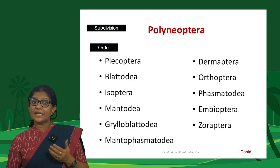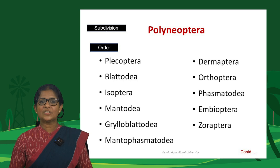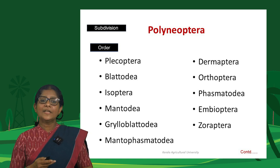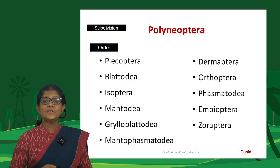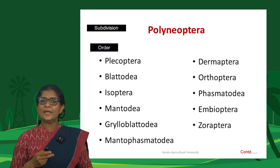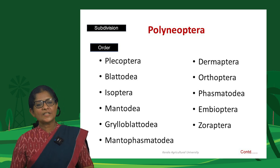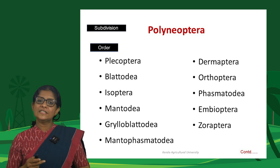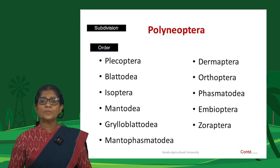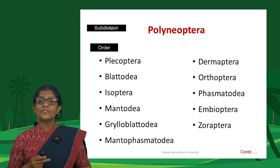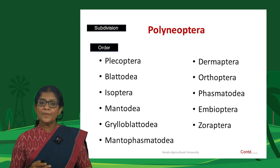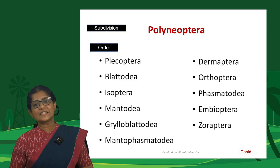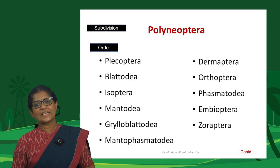The 11 insect orders under Polyneoptera are: Plecoptera, Blattodea, Isoptera, Mantodea, Grylloblattodea, Mantophasmatodea, Dermaptera, Orthoptera, Phasmatodea, Embioptera, and Zoraptera.